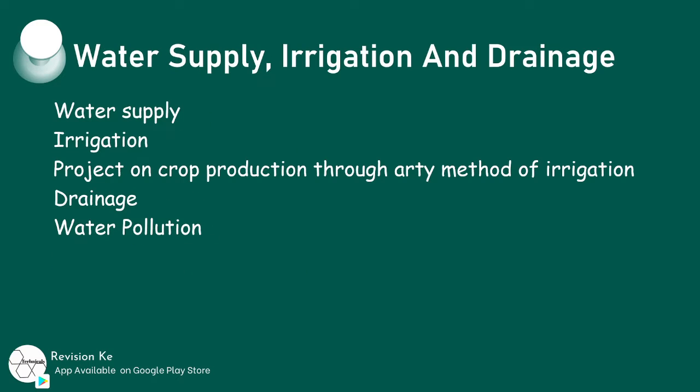We'll proceed to discuss irrigation by defining irrigation, explaining the importance of irrigation, describing methods of irrigating land, and listing the equipment used in irrigation. We'll further discuss how to grow a crop through irrigation, and carry out maintenance on irrigation equipment and facilities.